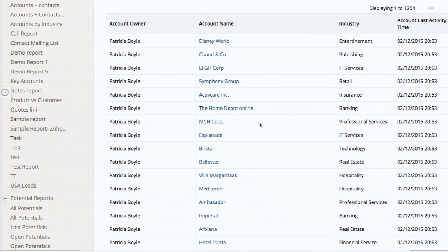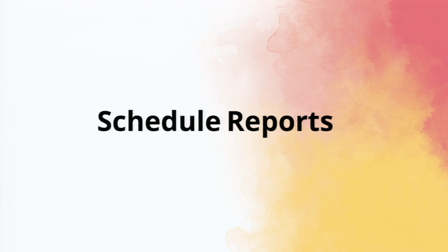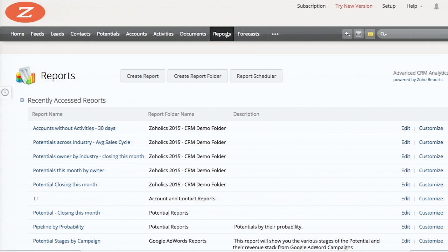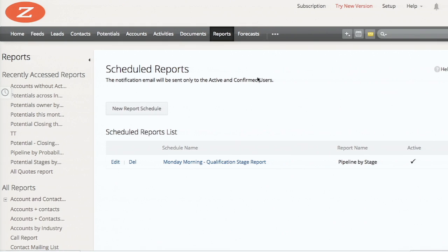This is how reports can add value - you can see owner names, their industries, and when the last activity happened. Now let's jump to scheduling reports. Scheduling simply emails reports to you and your team. You configure them - just click the report scheduler and you'll see the list of scheduled reports available for your business.